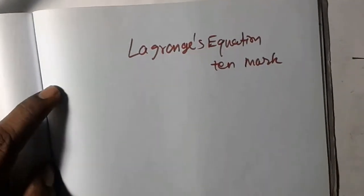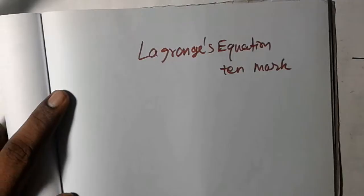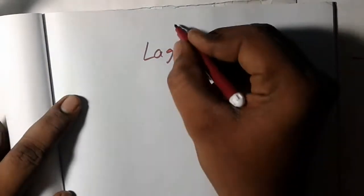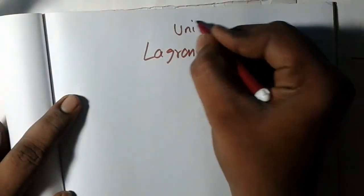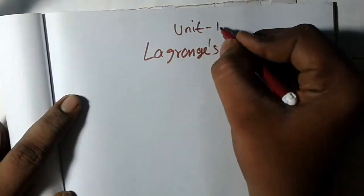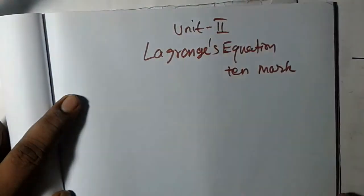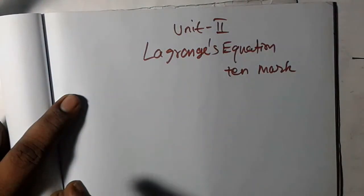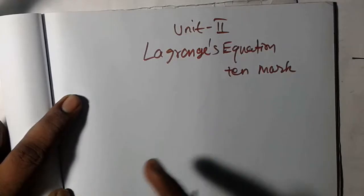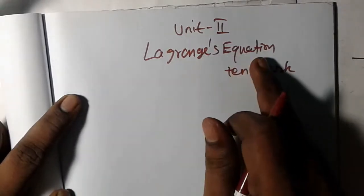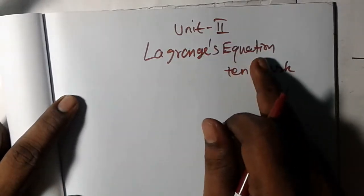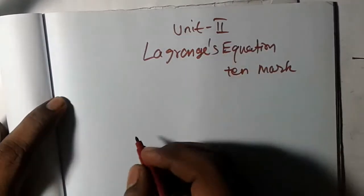Next one is unit number 2.2.10, concept one. I will show you the ten mark — the Lagrange equation concept one, ten mark — and explain it to you.